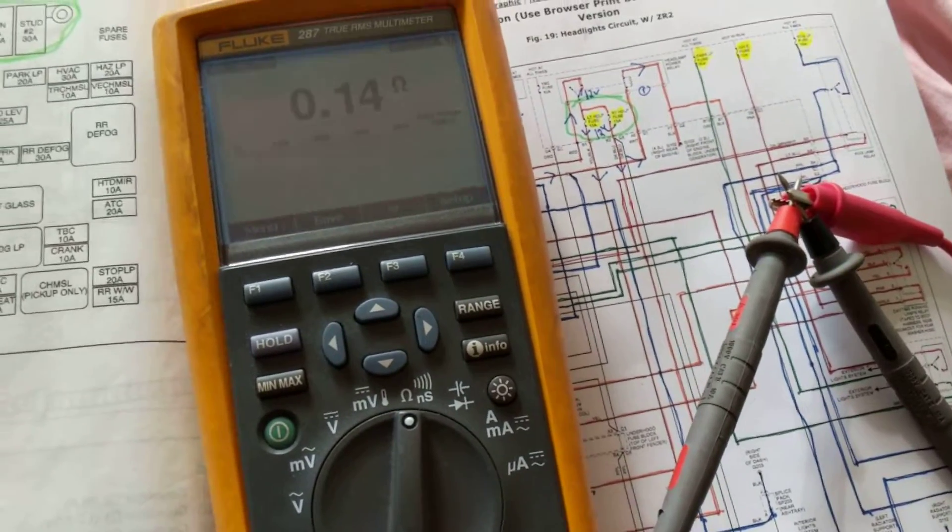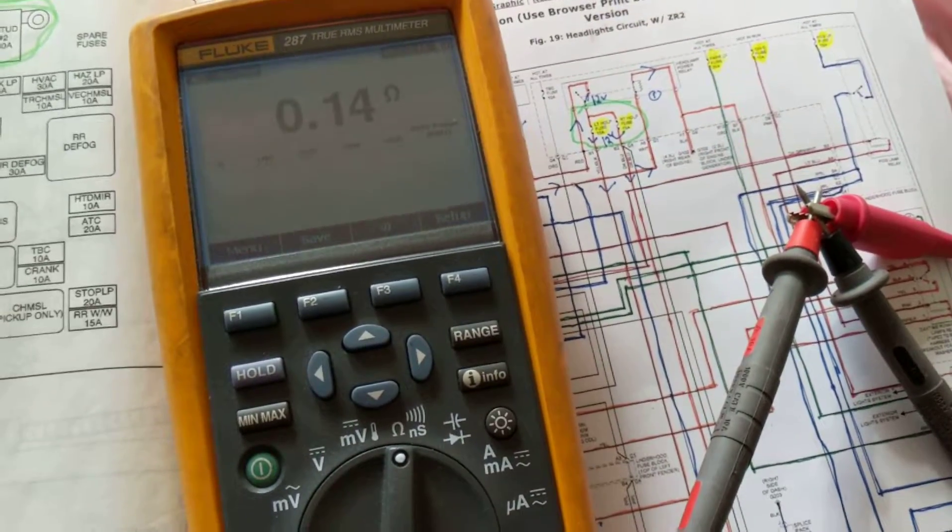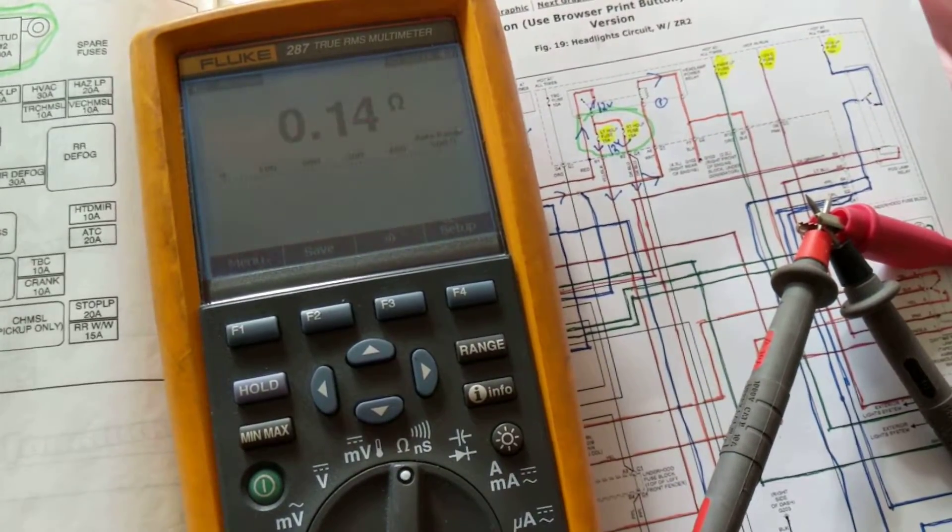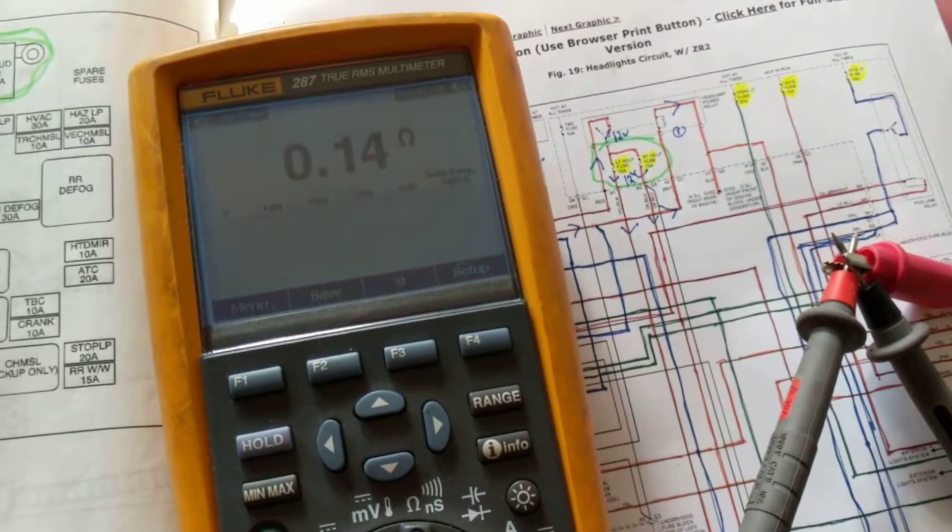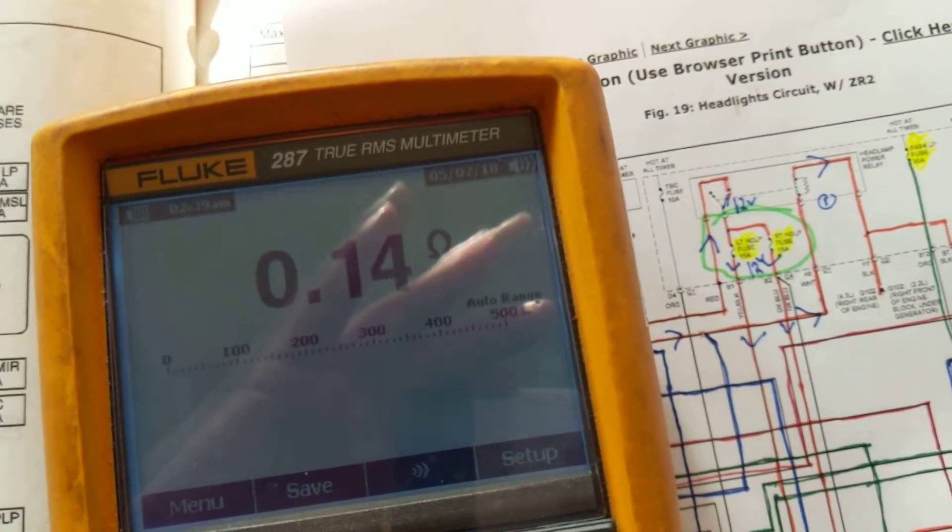Hello again, and this is going to be another tutorial about the best automotive meters. Last time we did the Fluke 87. We're upgrading now to the Fluke 287 True RMS.